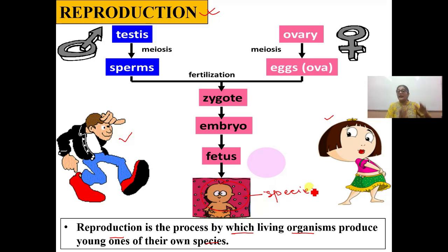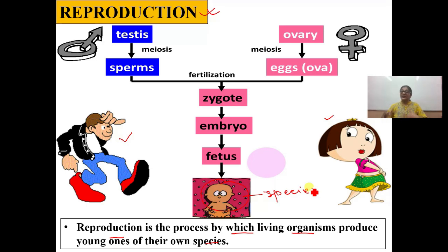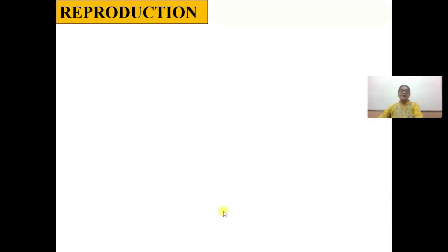I want to remind you: reproduction is not the formation of gametes, not the fusion of gametes, not the formation of a zygote, and not the formation of an embryo. Reproduction is actually the birth of the young one — when the child is born and takes its unique identity as a member of that species. That is when we consider reproduction to be complete.